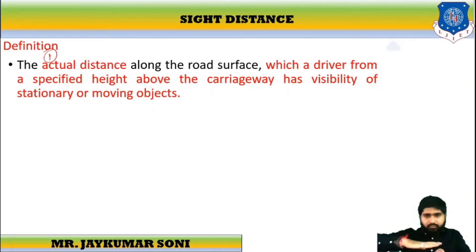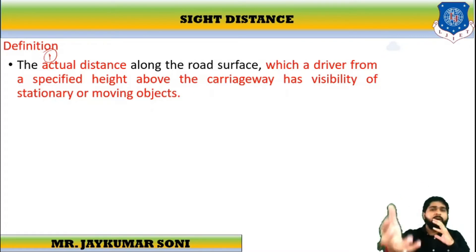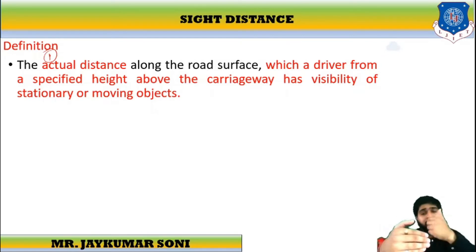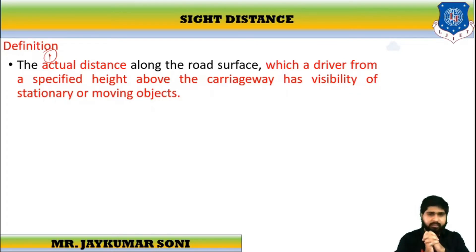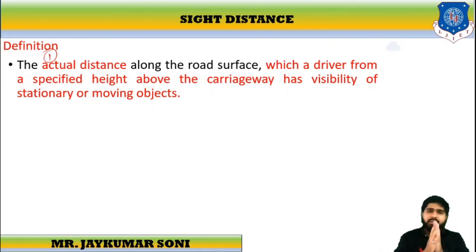Whenever I am driving at a specified height — while sitting in the car above the carriageway, above the road surface — I must have the visibility of stationary or moving objects lying ahead of me. When I am able to see that there is some obstruction on the road, certain animals are crossing the road, or certain stationary objects are there, there should be some distance between me and that object, and that distance is called sight distance. So it is the actual distance along the road surface which a driver from the specified height above the carriageway has the visibility of stationary or moving objects.